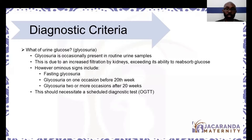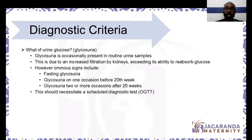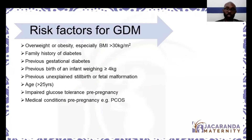The red flags when you have glycosuria include when it occurs in a fasting state — that could necessitate further investigation — or before the 20th week of pregnancy, because by then insulin resistance has not really kicked in and the GFR has not changed too much. Also if it happens twice or more after the second half of pregnancy, 20 weeks or later, that should necessitate a diagnostic test, which is the oral glucose tolerance test, or OGTT.